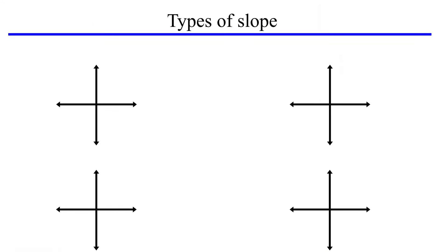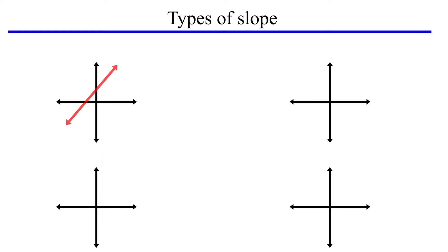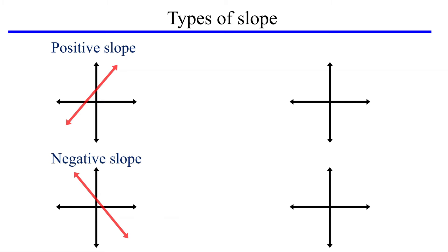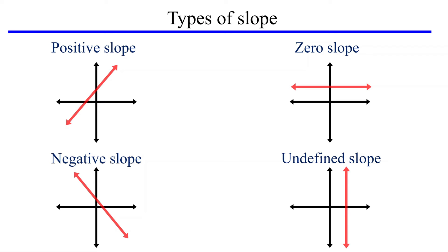In conclusion, lines that rise from left to right have a positive slope. Lines that fall from left to right have a negative slope. Horizontal lines have a slope of zero. Vertical lines have an undefined slope. For more on finding the slope from an equation or two points, check the link in the description. Give it a thumbs up and consider subscribing.